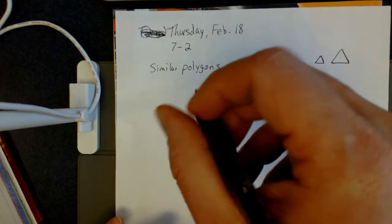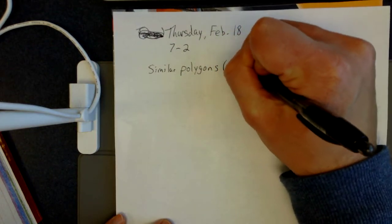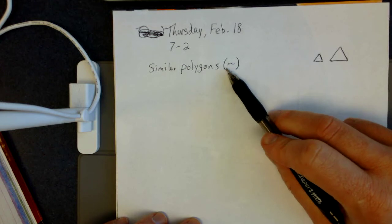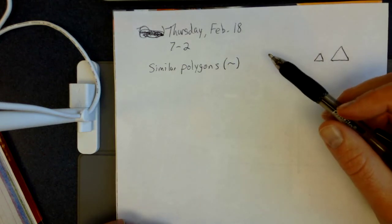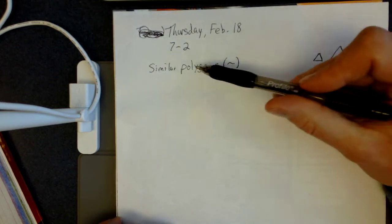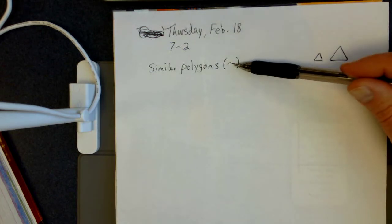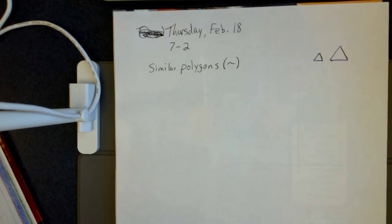We have a symbol we're going to use for similar. If you remember when we did congruence, we had an equal sign with a little squiggly line above it. For similar, you're just going to have the little squiggly line. You'll see that occasionally as we go through chapter 7 — that squiggly line means they are similar to each other.